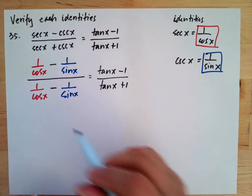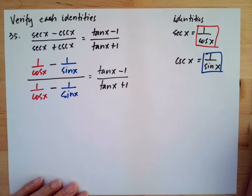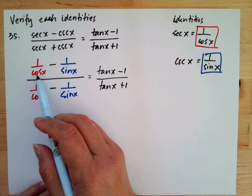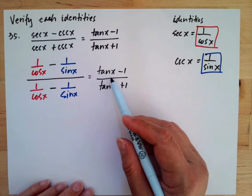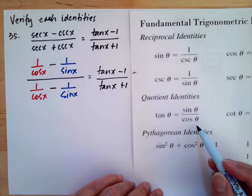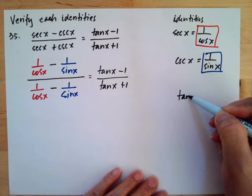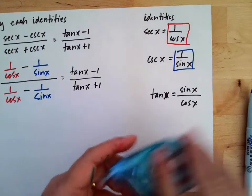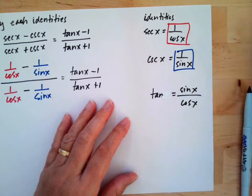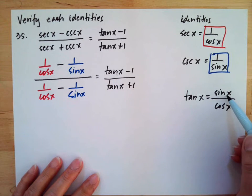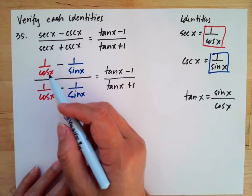We need to get a common denominator. We want to replace 1 over cosine x with tangent x. Recall that tangent x equals sine x over cosine x. To convert 1 over cosine x into tangent x, we need to multiply by sine x. Similarly, to convert 1 over sine x into 1, we multiply by sine x.